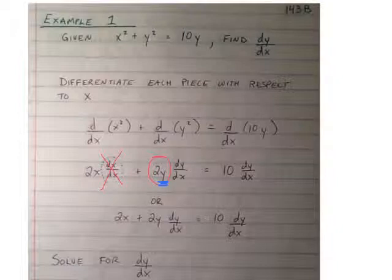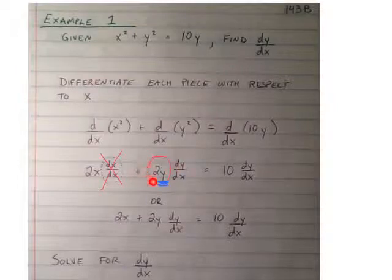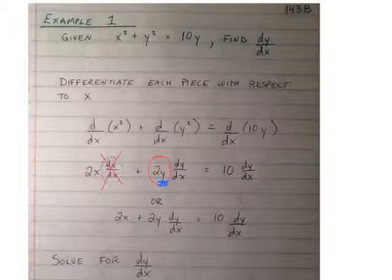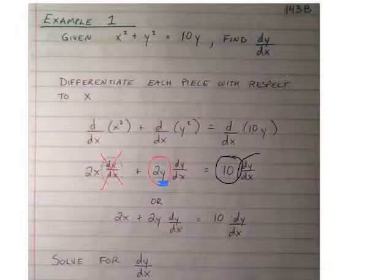So the red circle is the derivative of the outside function squared. And then dy/dx is the derivative of y with respect to x. Then we take the derivative of 10y with respect to x, and the derivative of 10y is 10 times the derivative of y.